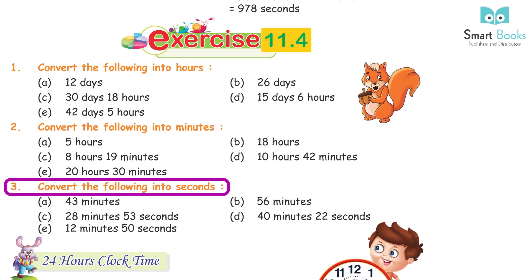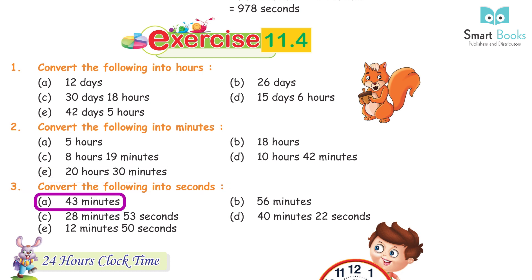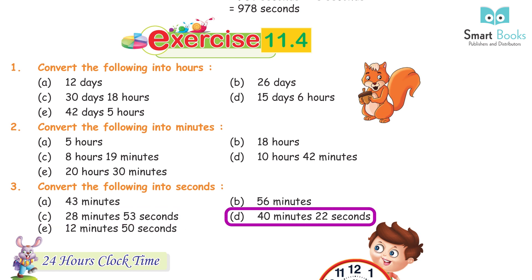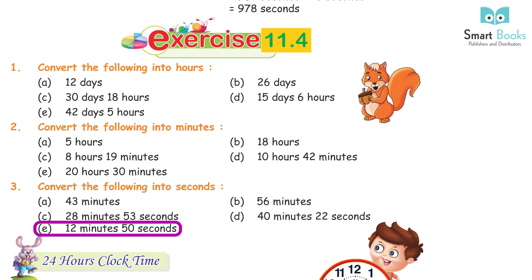Question 3: Convert the following into seconds. A. 43 minutes = 2580 seconds. B. 56 minutes 33 seconds = 3393 seconds. C. 28 minutes 53 seconds = 1733 seconds. D. 40 minutes 22 seconds = 2422 seconds. E. 12 minutes 50 seconds = 770 seconds. Also note: 24 hours clock time.